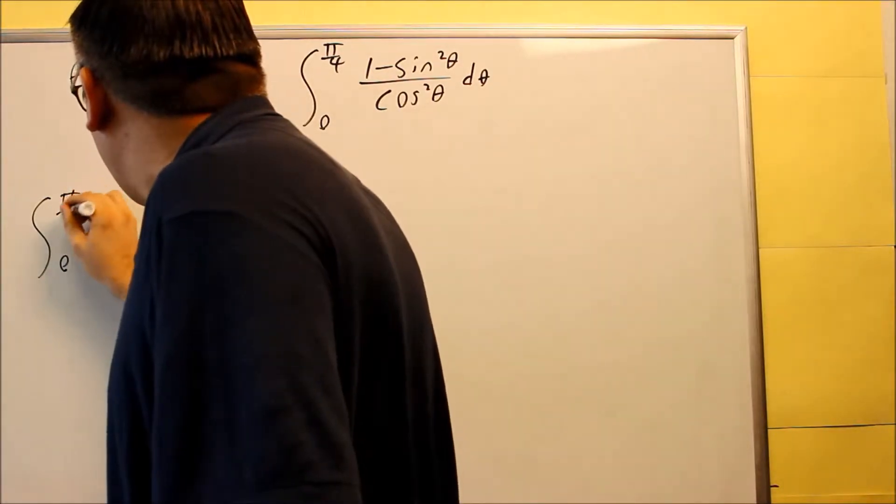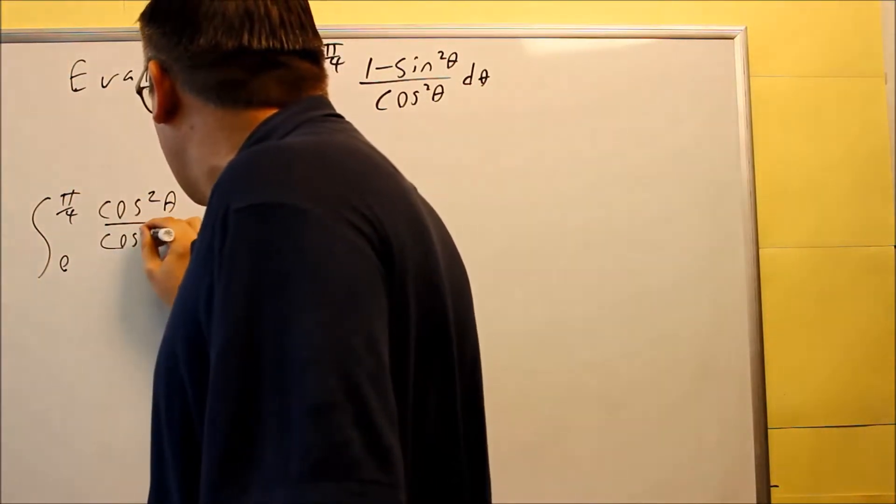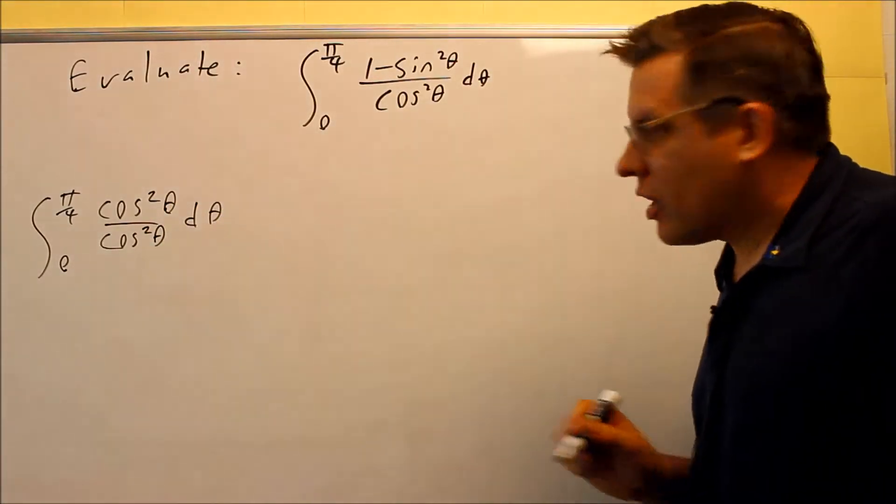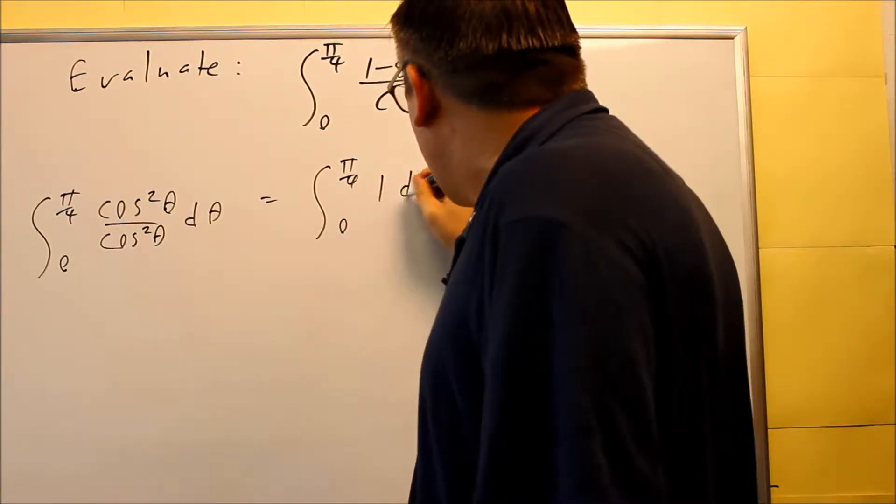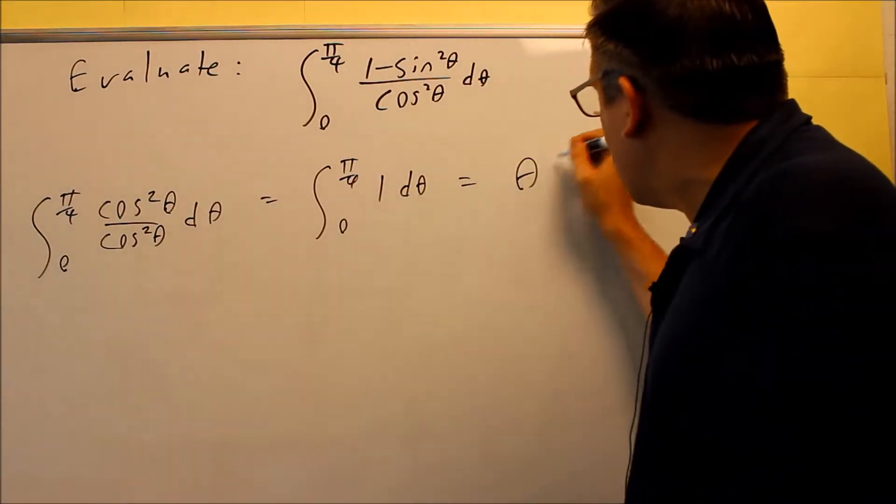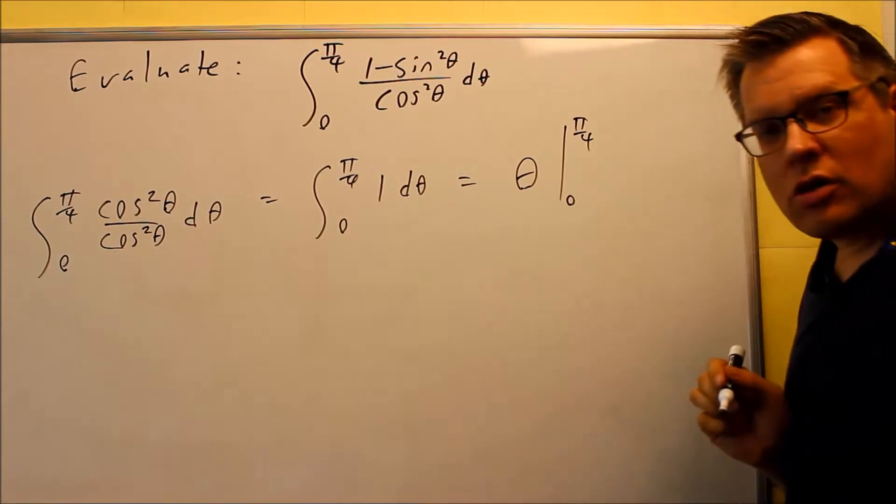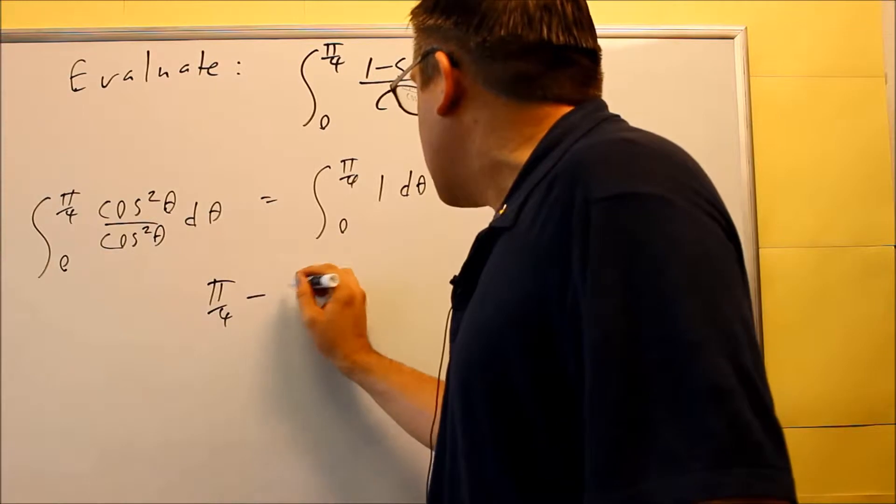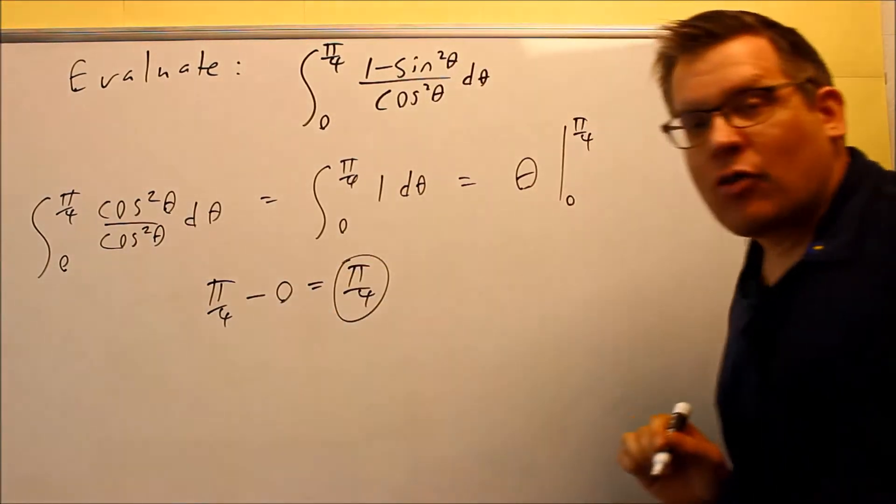So I can do 0 to π over 4 cosine squared θ over cosine squared θ. And then when I do that, the cosines are going to cancel. And that's going to leave me with a 1 left over. So I have a 1 dθ. And when you integrate that, you're just going to get θ. And that's between 0 and π over 4. So then you're just going to put π over 4 in for each one. π over 4 minus 0. That means that your answer is going to be π over 4.